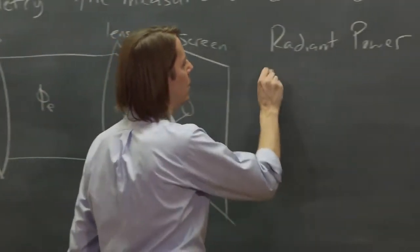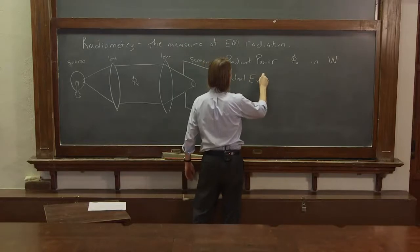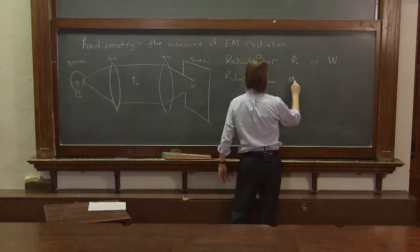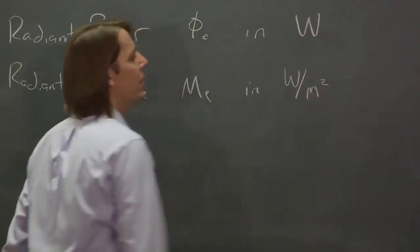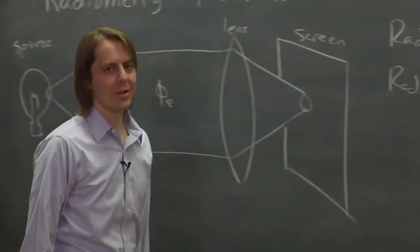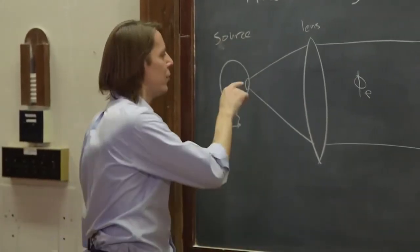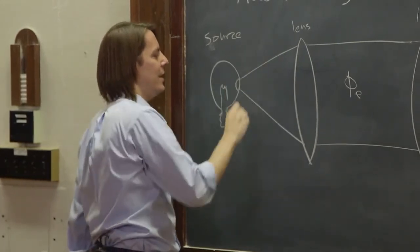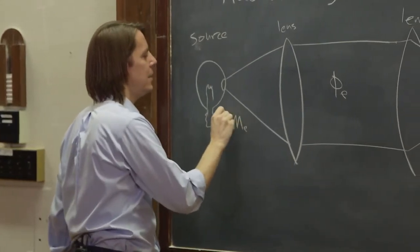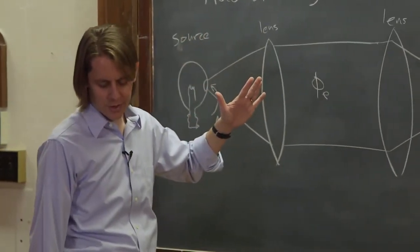The next one is the radiant exitance. And that is Me. And that is in watts per meter squared. But it's not the irradiance. It's the radiant exitance. The radiant exitance is for the watts per unit area leaving a surface. So Me is for this side because it's emitted off of a source.